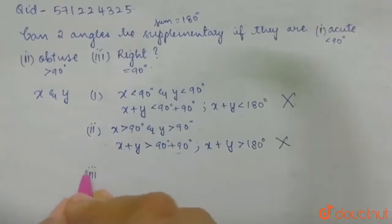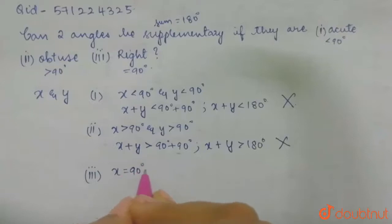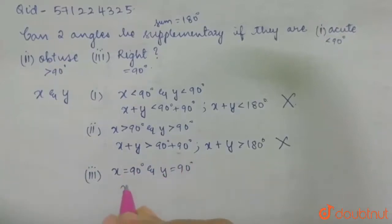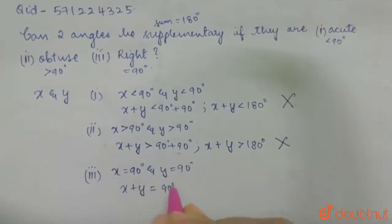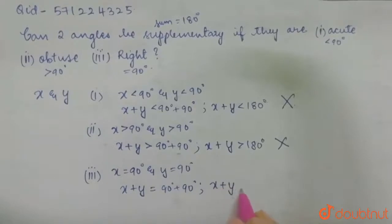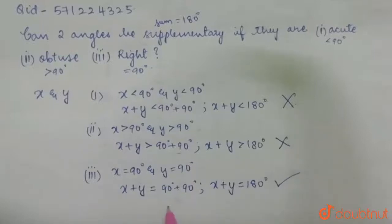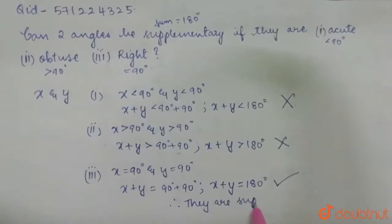Now let's go with the third case — right angles. x equals 90 degrees and y also equals 90 degrees. Adding them: x plus y equals 90 degrees plus 90 degrees, which gives x plus y equals 180 degrees. Here it is satisfying, so hence they are supplementary.